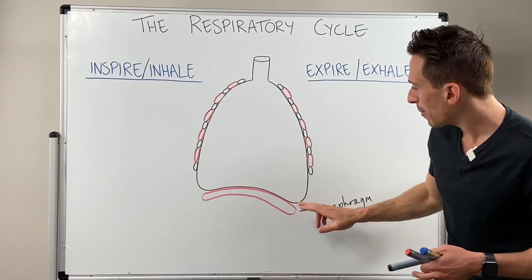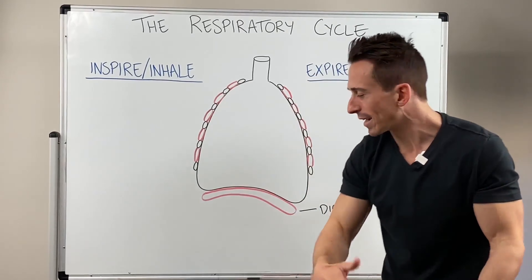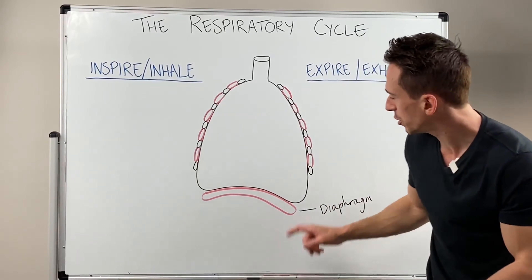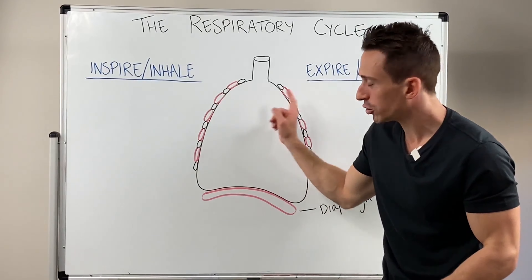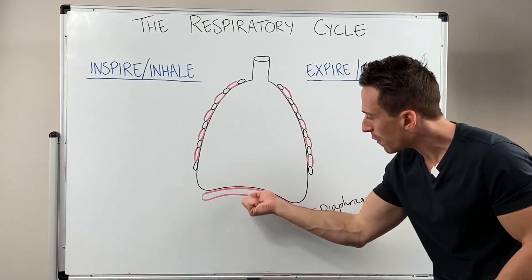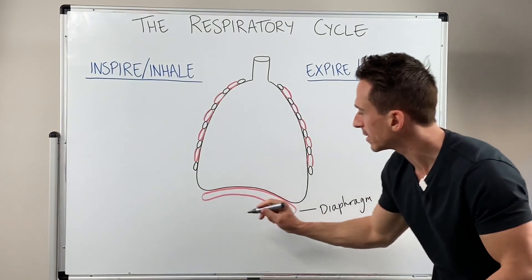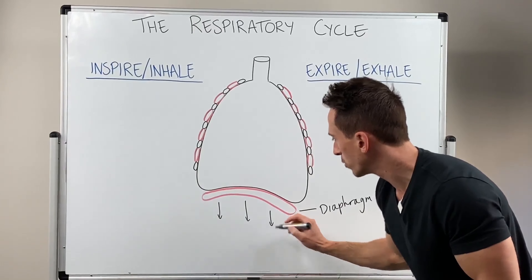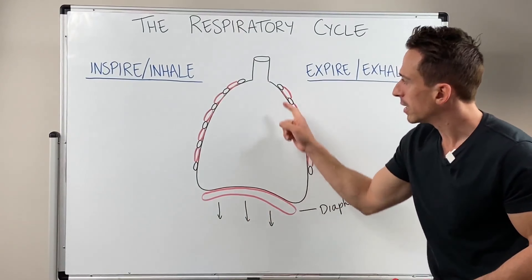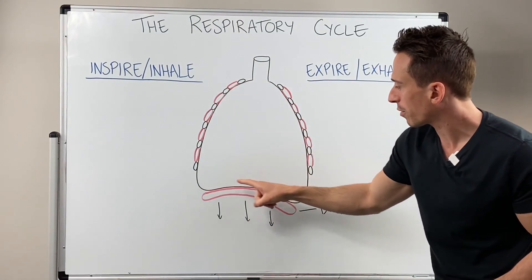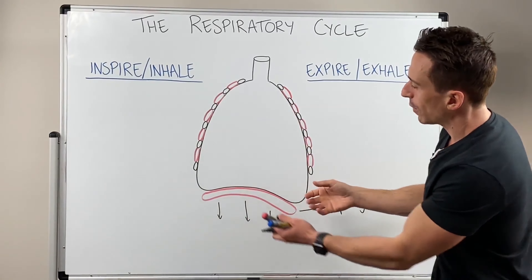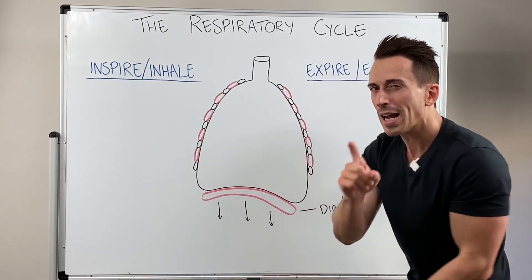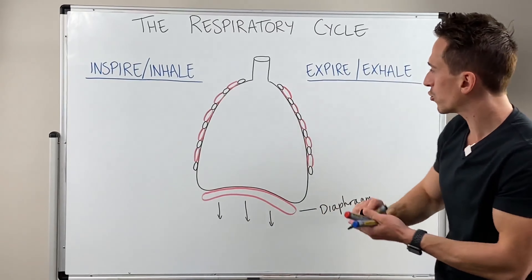So what happens is this: the diaphragm when it's relaxed has this dome shape to it, and it's attached to the lung tissue, which we can see here. When the diaphragm contracts, the diaphragm pulls down. When it pulls down, it's pulling this region of the thoracic cavity with it, so it gets larger. At the same time, other muscles contract.